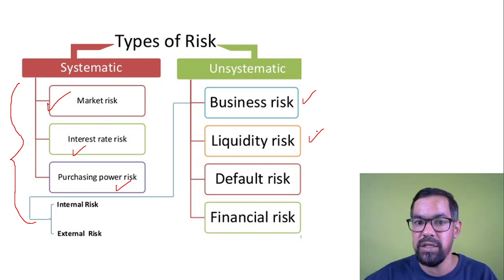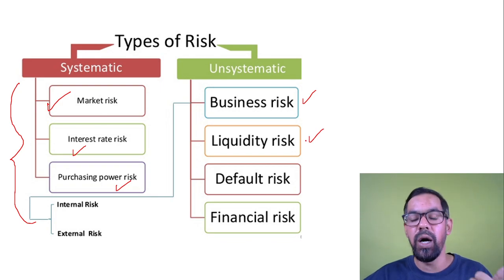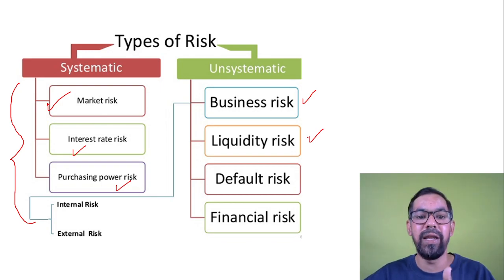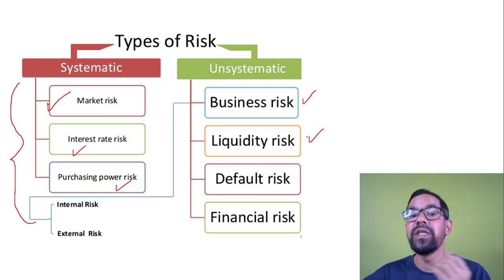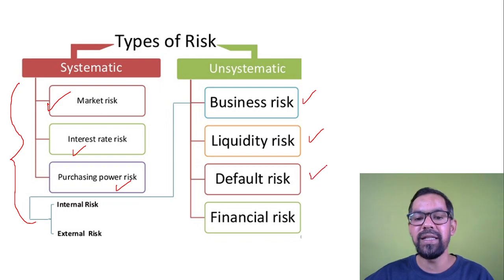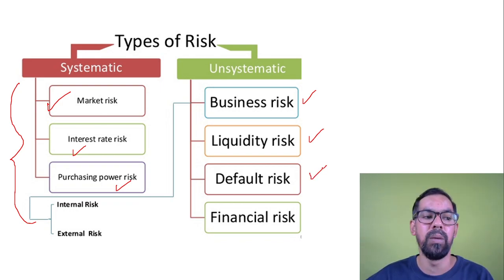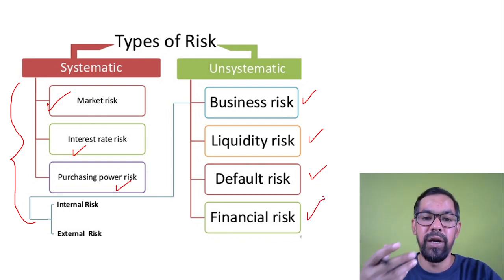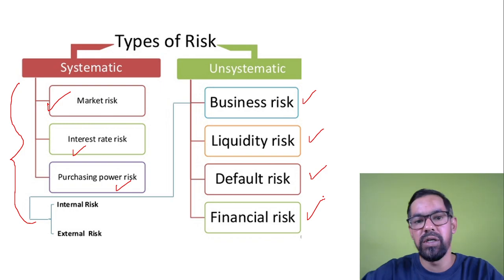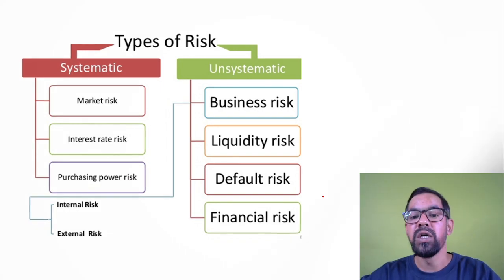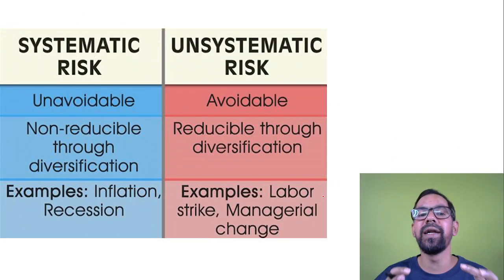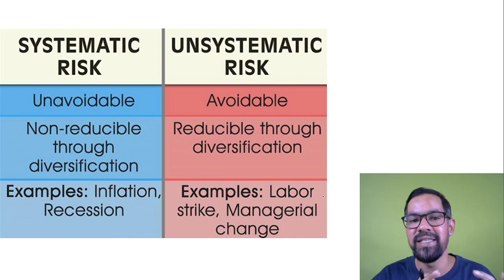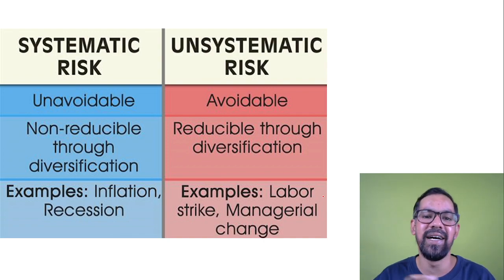Liquidity refers to being converted into cash or cash equivalents. If any organization or bank faces these kinds of issues, that is liquidity risk. Default risk is like credit risk — when borrowers are not returning money. Financial risk can be related to an individual or a specific organization. The basic difference between systematic and unsystematic risk is important to remember.